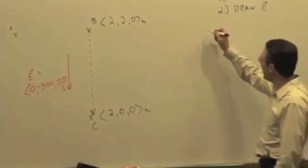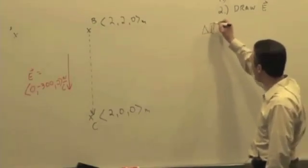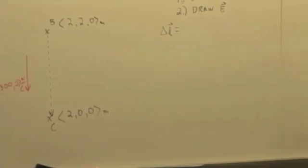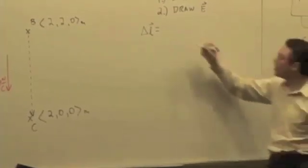So I can calculate what this path vector is by saying what? What's going to be the path vector? C minus B, right? Final minus initial.